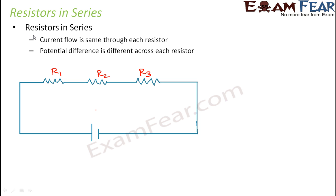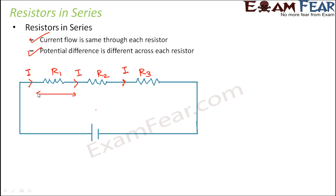In series combination, current flow is the same through each resistor. If current I flows through R1, the same current I flows through R2 and through R3. Secondly, the potential difference is different across each resistor. The potential difference across R1 is V1, across R2 is V2, and across R3 is V3. So the potential difference gets distributed among the three resistors.